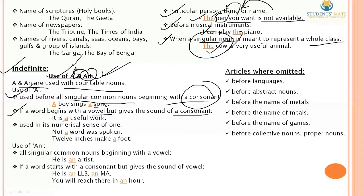For example: 'It is a useful work.' Useful starts with 'u', but the sound it produces begins with 'you' (a consonant sound), so it is considered a consonant. Therefore, 'a' is used before it. On the other hand: 'He is an artist.' Here 'artist' starts with a vowel sound, so 'an' is used.